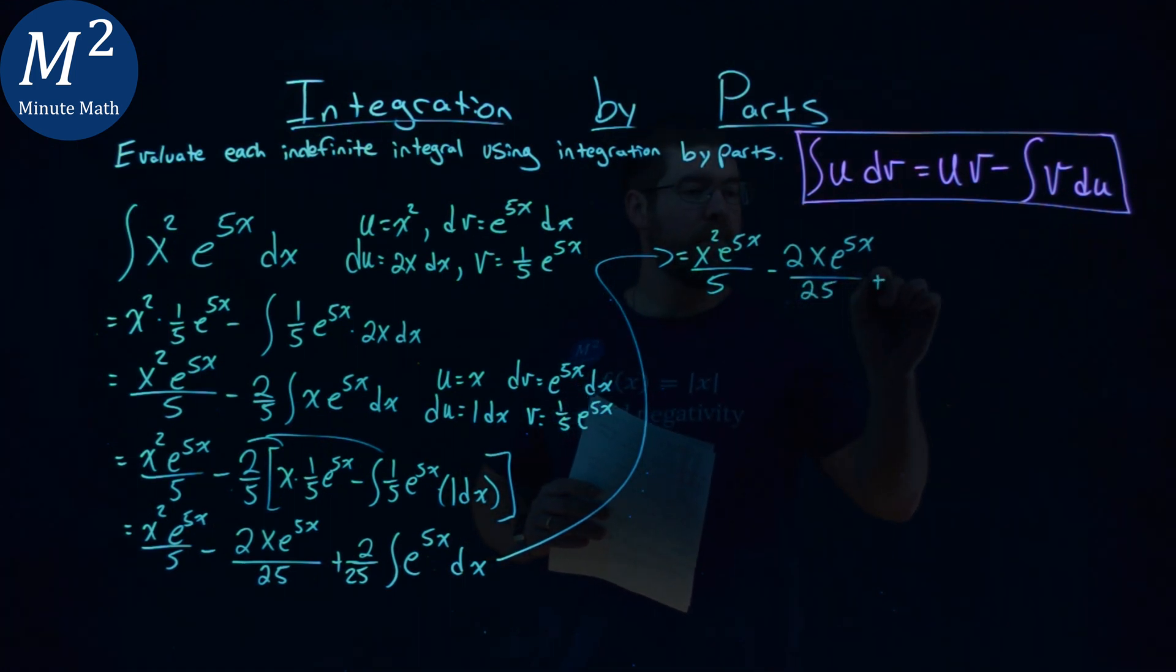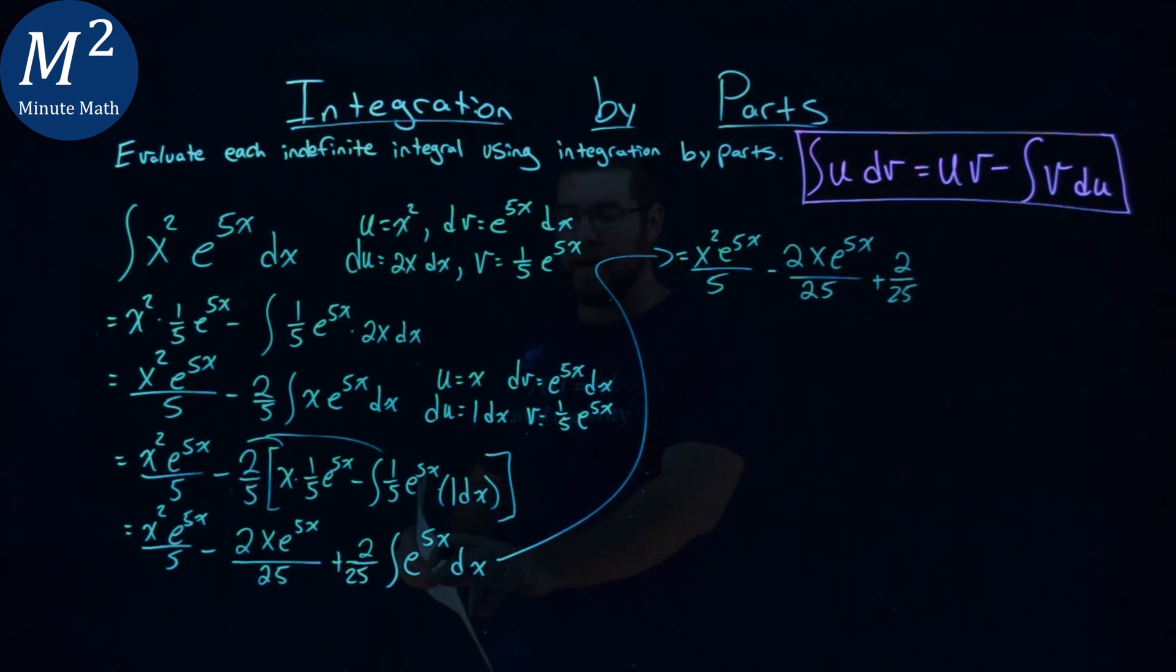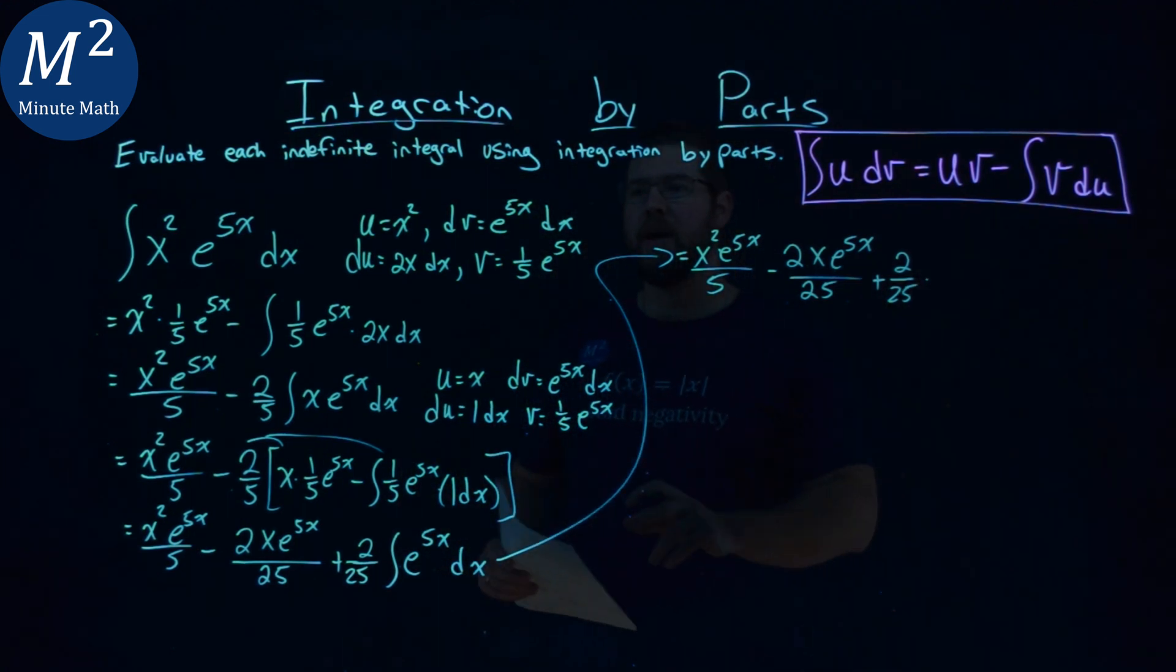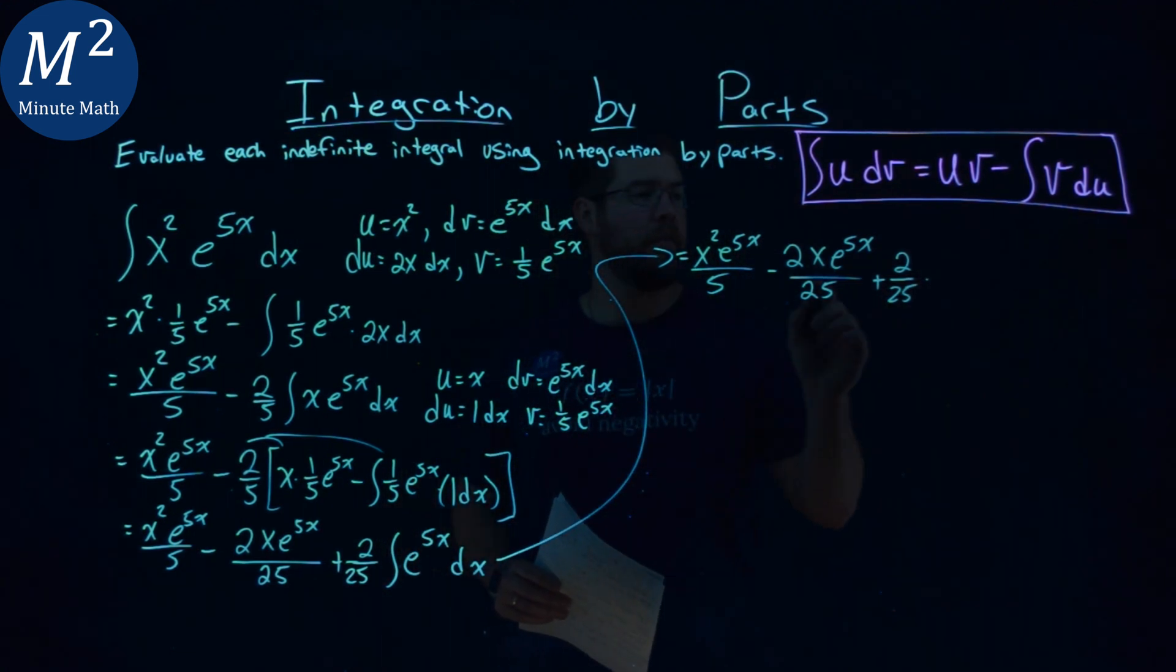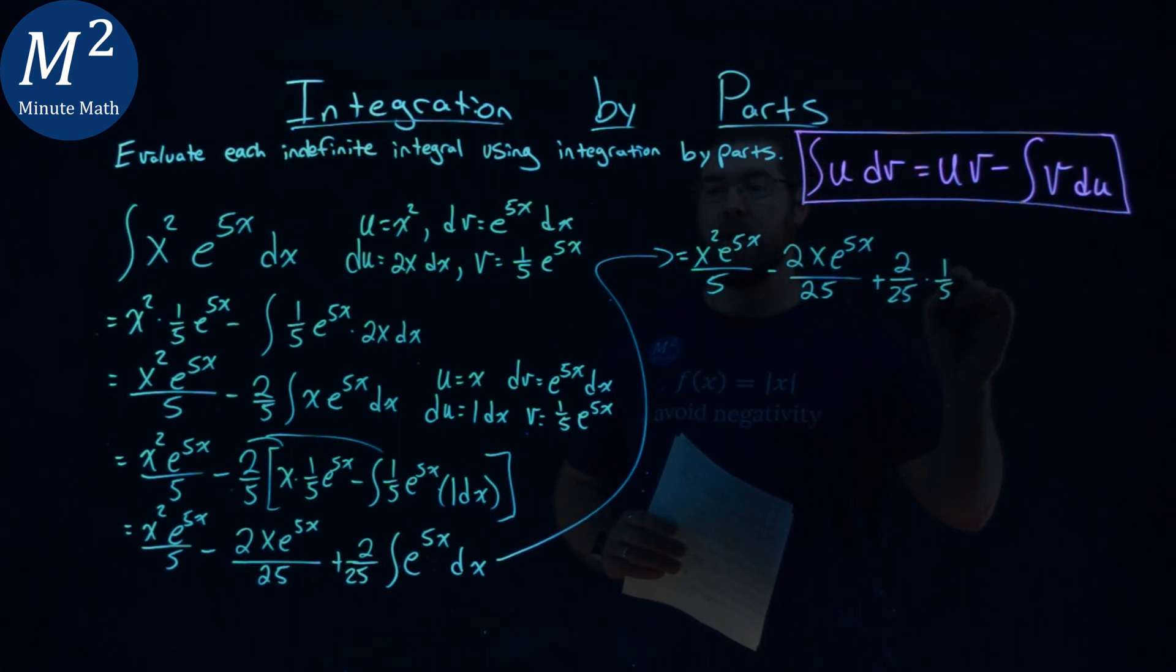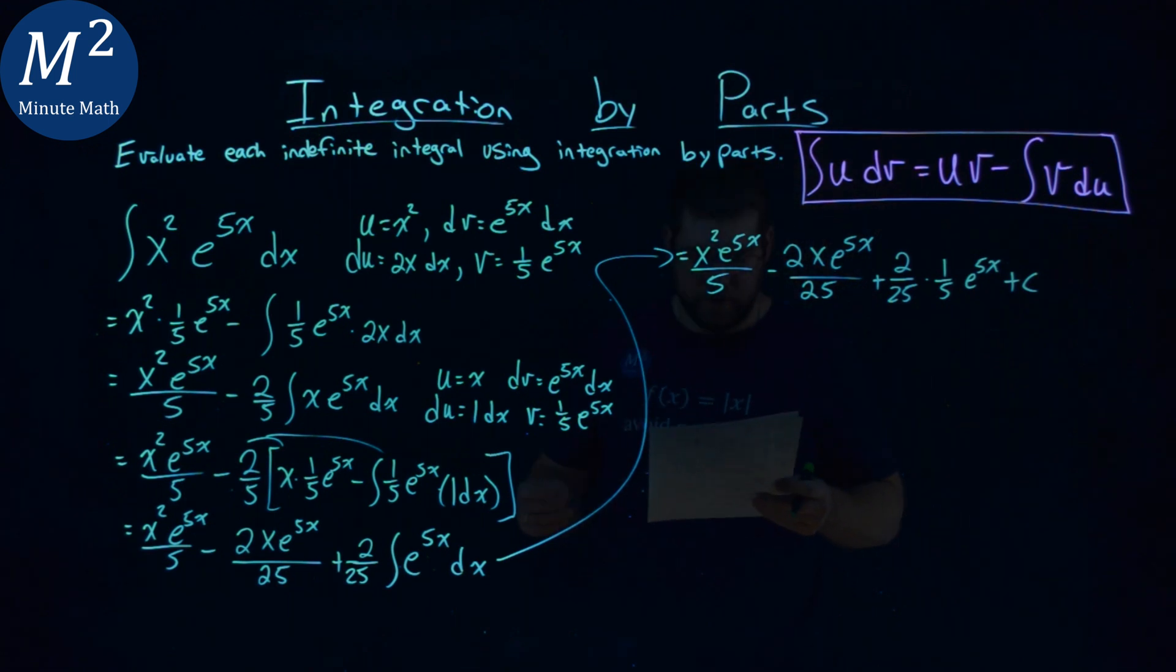plus - I'm going to put 2 over 25 here. Let's find the integral of e to the 5x, and we've already found that: one-fifth e to the 5x power. Don't forget the plus c now - it's our last integral.